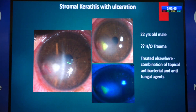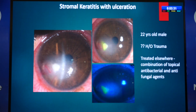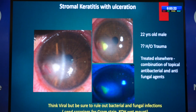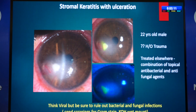Think viral but be sure to rule out bacterial and fungal. Even with high clinical suspicion of viral etiology, scrape and send for bacterial and fungal cultures. If it is not responding to antibacterials or antifungals after two months, one more day to wait for results won't make a difference. Starting systemic antivirals and steroids: one patient cleared all inflammation in two weeks with vision of 6/36, mainly due to cataract — which improved later after cataract surgery.